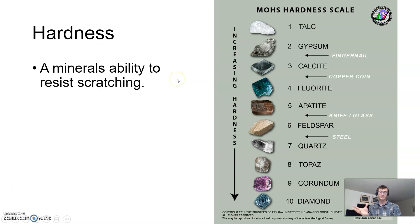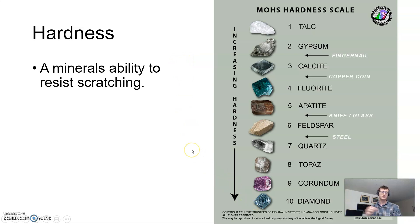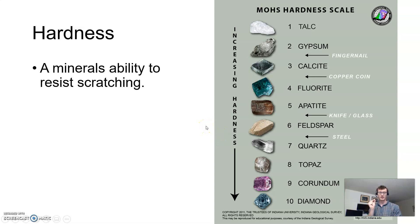Hardness is a mineral's ability to resist being scratched. This is not necessarily an indication of mineral strength in a structural sense. Something like diamond — if you put it on a wooden table and hit it with a hammer, it will break very easily. But if you put it on the tip of a drill, it will be able to cut into anything you want. It can scratch any material.